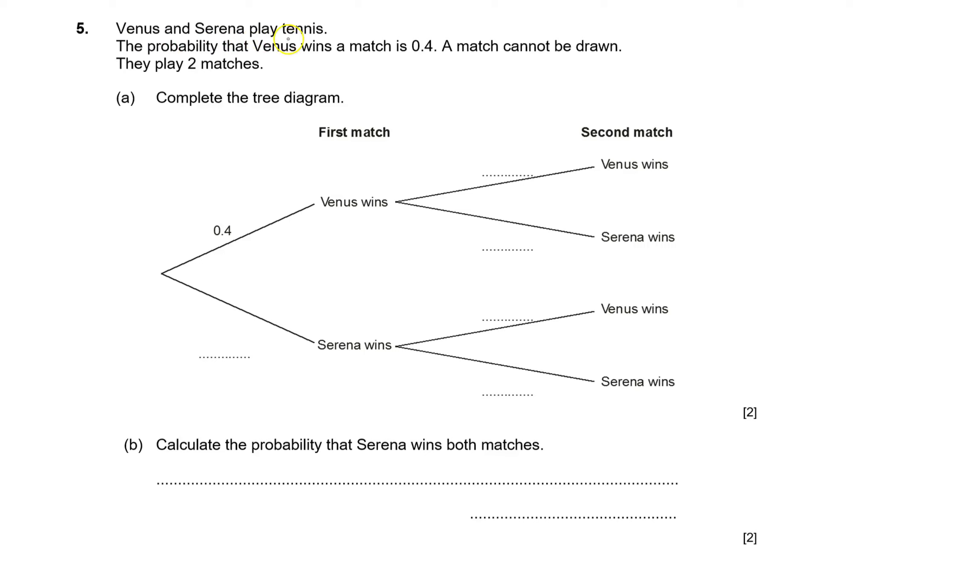Venus and Serena play tennis. The probability that Venus wins a match is 0.4. A match cannot be drawn. They play two matches. Complete the tree diagram.